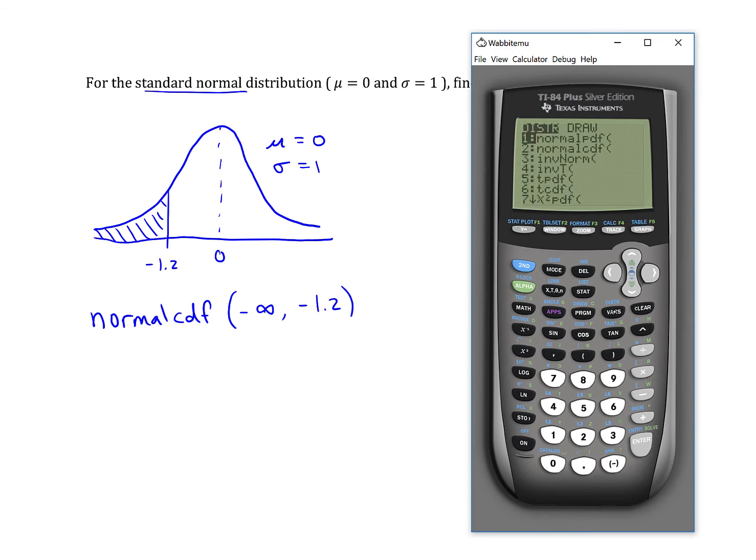So 2nd and vars takes me into the distributions menu, going down to normal CDF. And there's no number to type in for negative infinity, but I can do negative 2nd comma, which gives me an E.